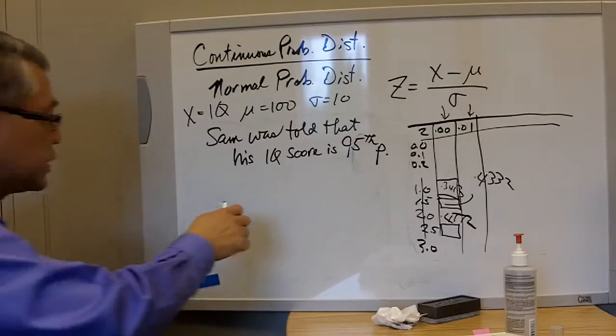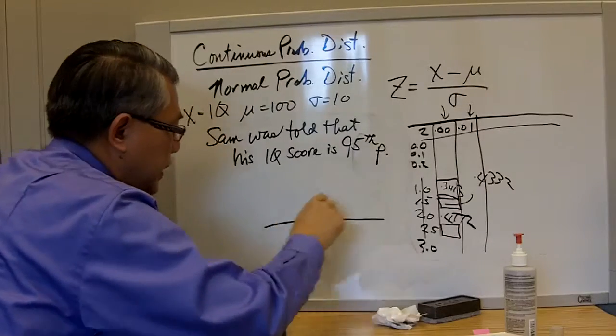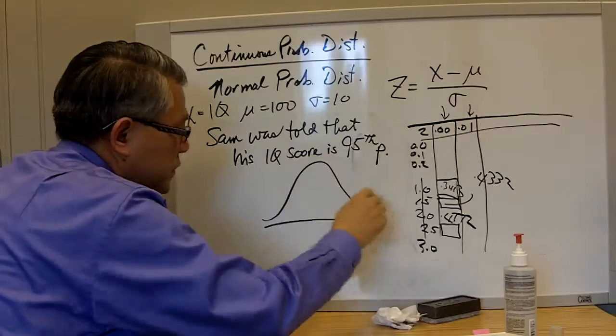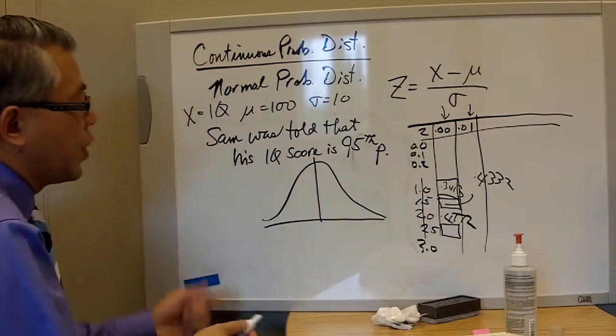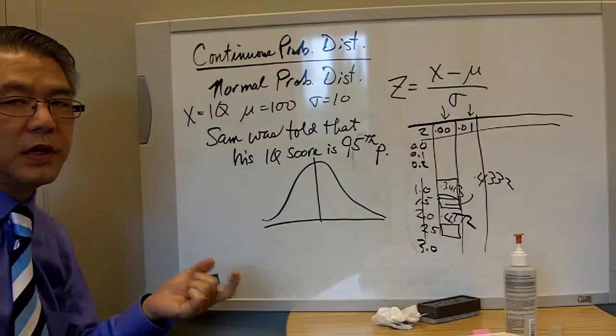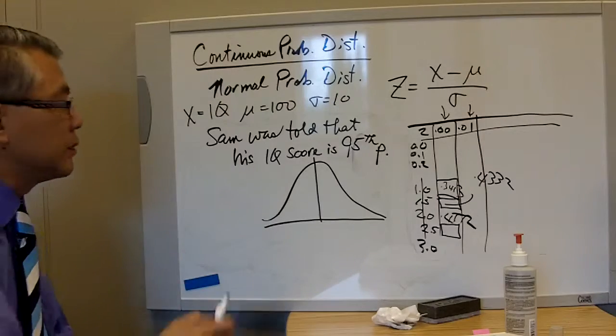So the way I would approach the question is that I draw a normal curve diagram and we are working backward instead of working to find the probability. We are basically given the probability.